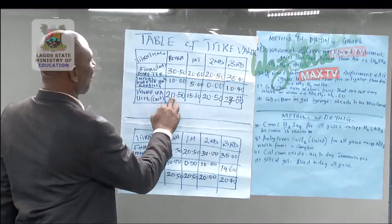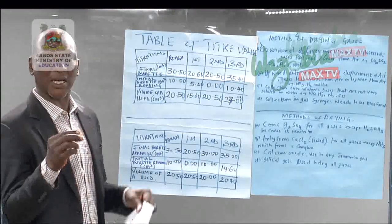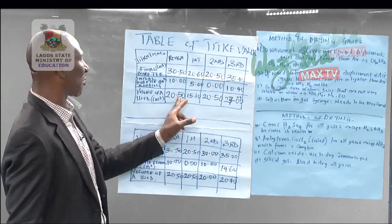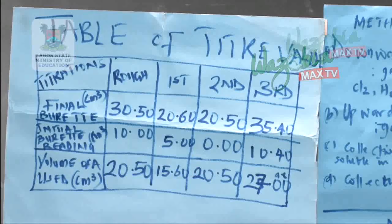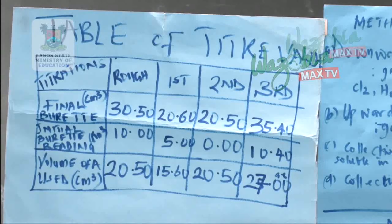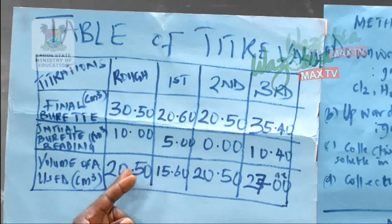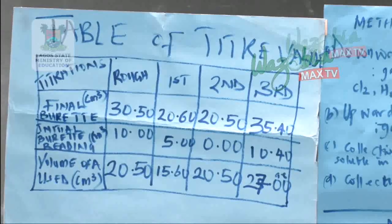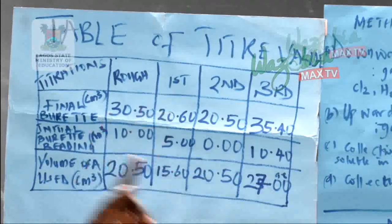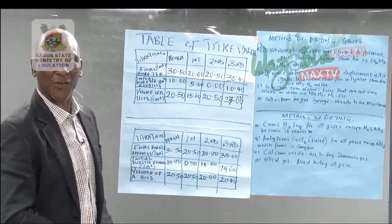Here we have 20.50 and then 20.50 also. There is something that we call concordant values. The concordant values are the values that are the closest. When you look at 20.50 and 20.50, they are the concordant values. So if you are calculating the volume of acid used, you use these two values — 20.50 and 20.50 — and divide by two. You cannot use three values when the values are far apart, and that is why concordancy matters. This concordant reading attracts four marks, or another four marks — that is eight marks total. But if you have made an arithmetic error, a mark will be deducted, and if your values are not concordant, you will lose several marks also.